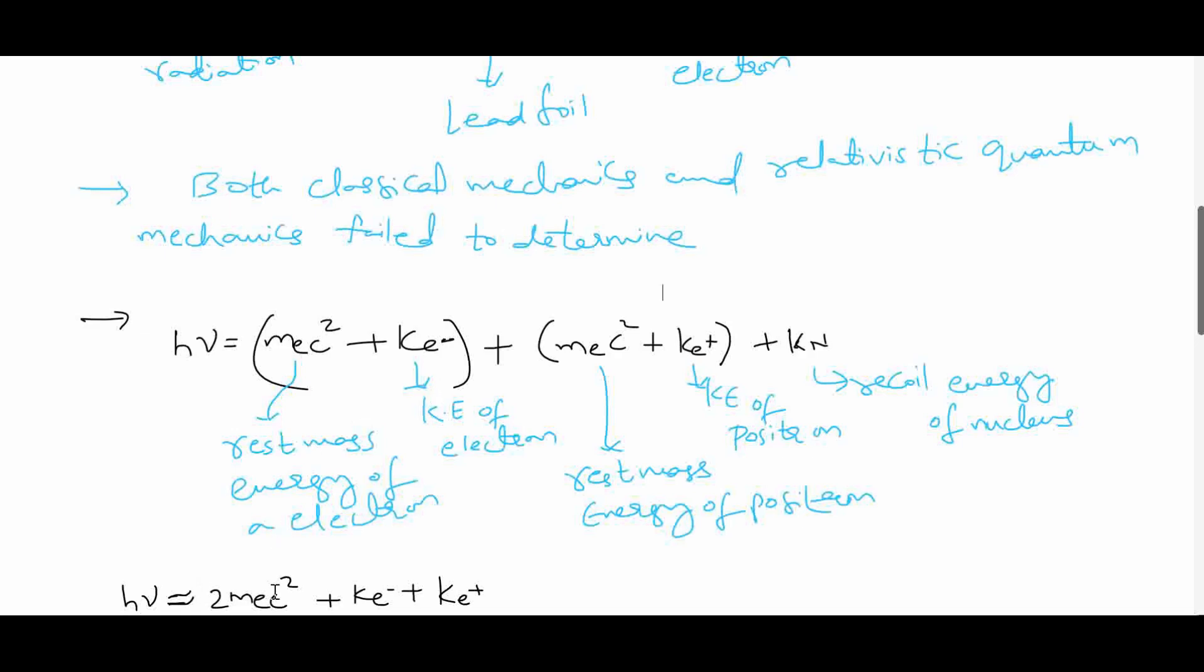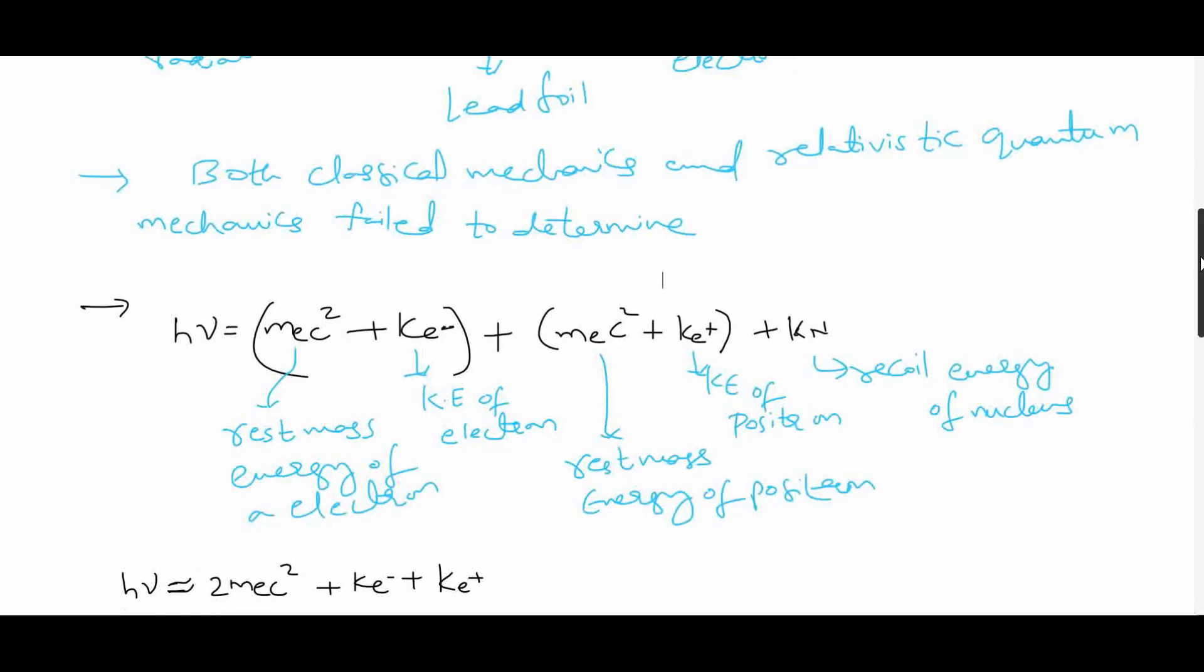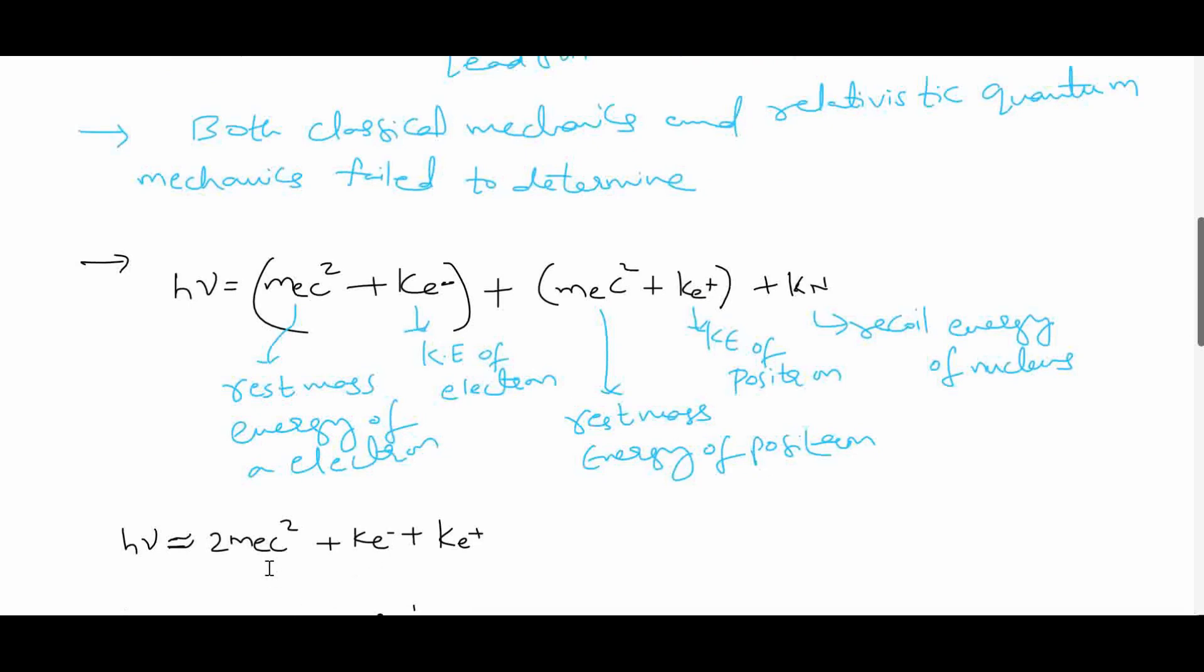As the rest mass energy of electron and positron are the same because their masses are equal, we can write it as twice the rest mass energy of electron plus kinetic energies of electron as well as positron. They are different.